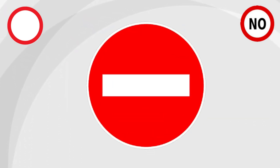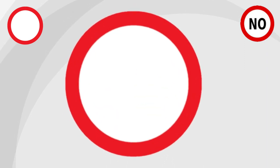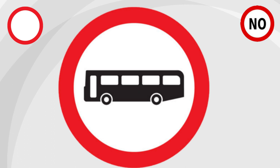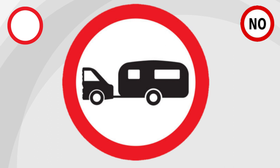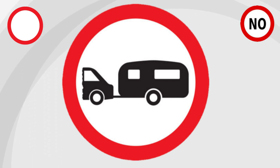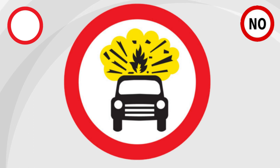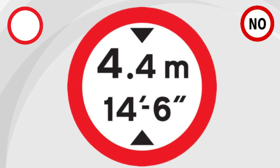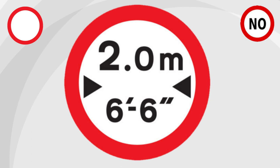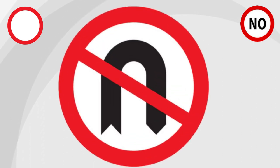No entry for vehicular traffic. No vehicles — this means with or without a motor, so it includes bicycles. No buses. No overtaking. No vehicles pulling a trailer. No vehicles carrying explosives. This sign is showing the length of a vehicle; as it's in a red circle it means no vehicles over the stated length. No vehicles over the stated height. No vehicles over the stated width. No U-turn.